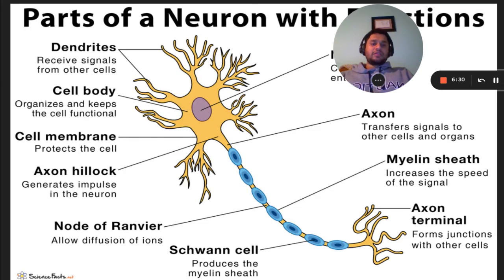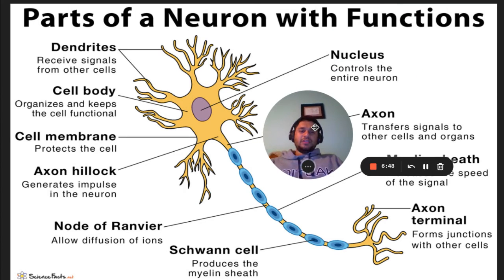The axon is the signal membrane that transfers signals to other cells and organs. The axon terminal forms junctions with other cells. A certain threshold needs to be reached for each neuron for it to send the impulse along the axon. If that threshold is not reached, then the signal is not sent.